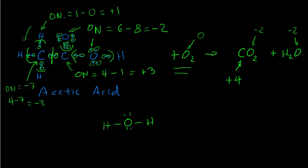As a final example, let's assign oxidation numbers in water using its Lewis structure. Oxygen gets all the shared electrons since it's more electronegative. Counting all electrons assigned to oxygen gives eight. The oxidation number is its normal valence — six — minus eight, giving minus two. The hydrogens have no assigned electrons, so they are plus one. This confirms how we can assign oxidation numbers directly from a Lewis dot structure.